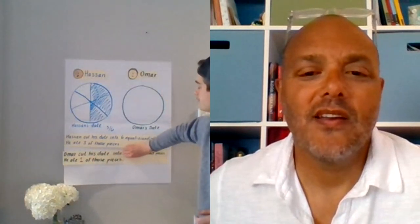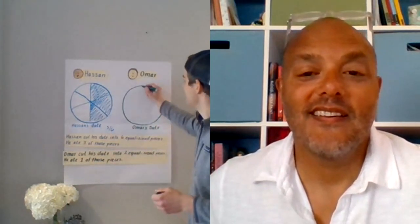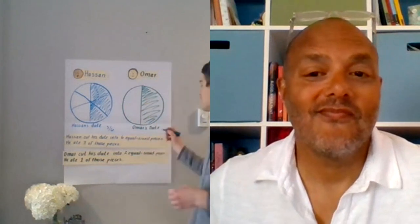Now let's look at Omar and figure out how much he's eaten. Omar cut his date into two equal-sized pieces and he ate one of those pieces. Omar decided to make some bigger slices — he cut it right down the middle and ate this entire piece. When I look at this date, he's cut it into two equal pieces — that's my denominator — and he ate one of the pieces. So our problem is: who ate more of their date? Hasan ate three-sixths of his date, but Omar ate one-half.